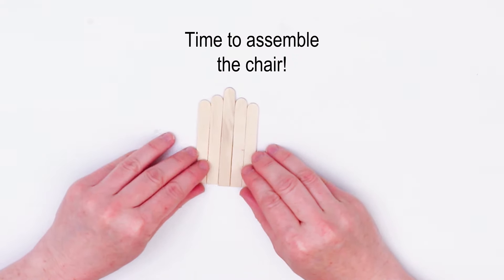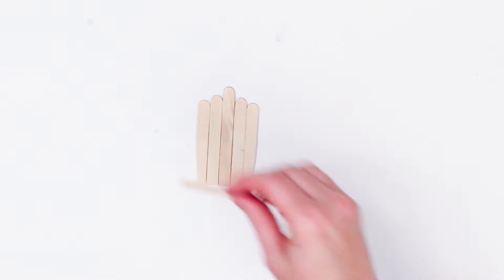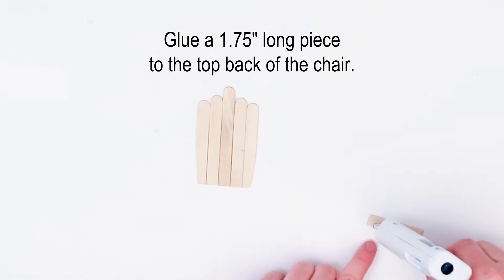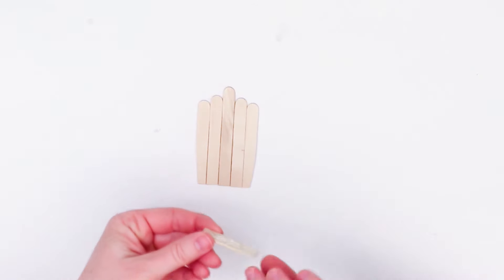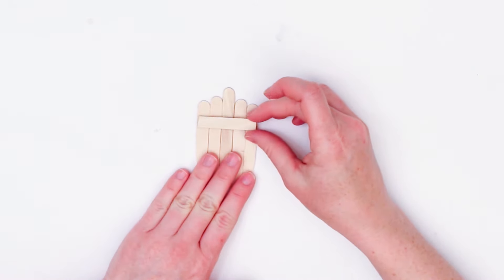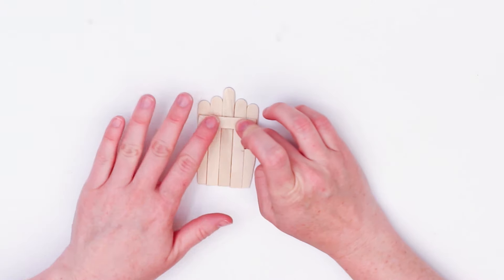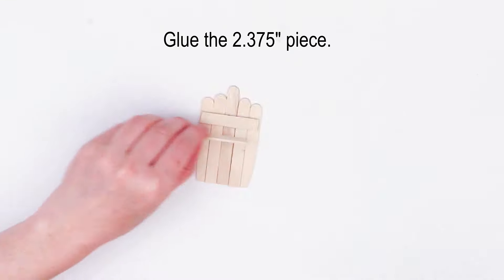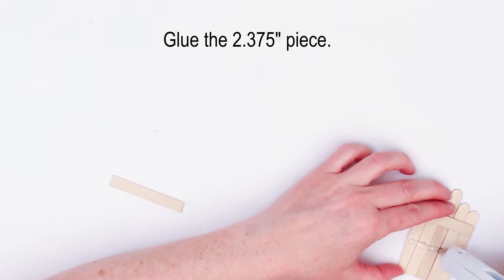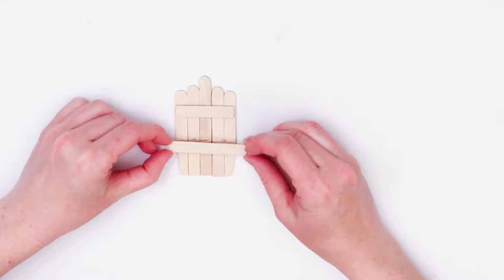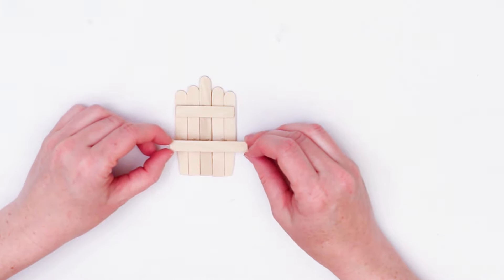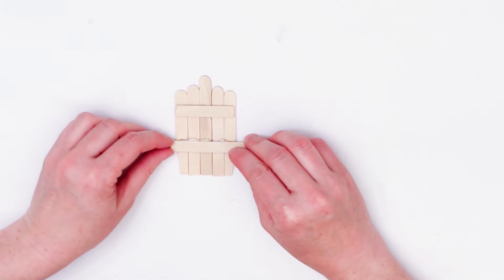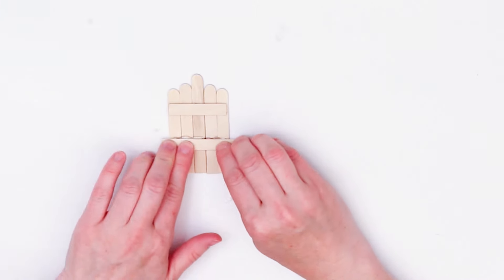Now it's time to assemble the chair. Let's start with the chair back. Assemble all five of the pieces side by side and then glue together with one of the shorter pieces that's 1.7 inches long. Also about one third way up along the chair glue the longer piece with the flat ends to hold the chair back together. This will also be the place of contact for the chair arms that you'll glue on later.